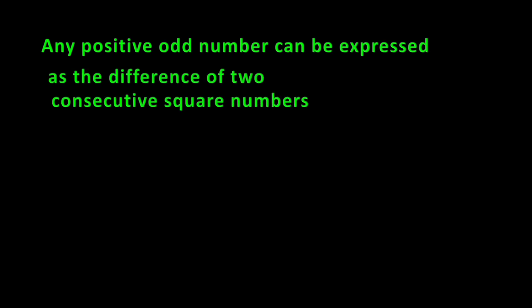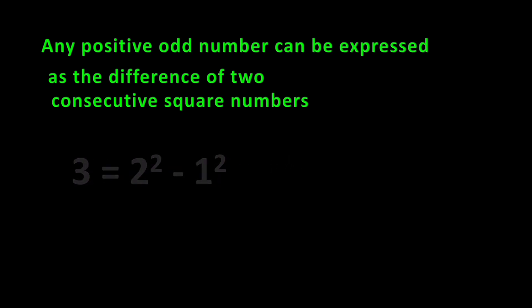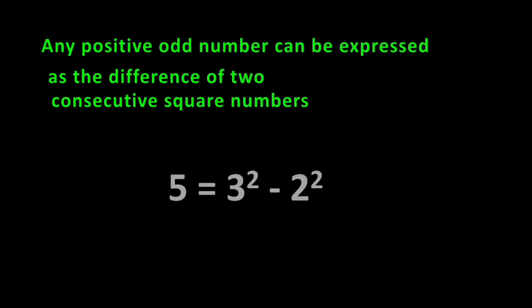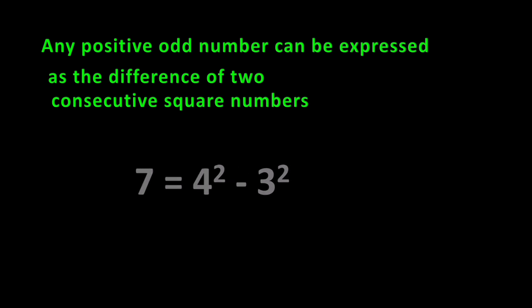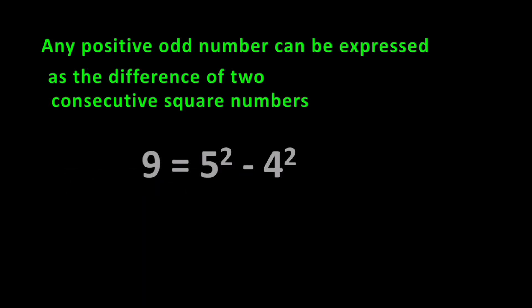After one, three is an odd number and three can be expressed as the difference of two consecutive square numbers: 2² minus 1². Next is 5, which can be expressed as 3² minus 2². Seven equals 4² minus 3². Nine equals 5² minus 4².